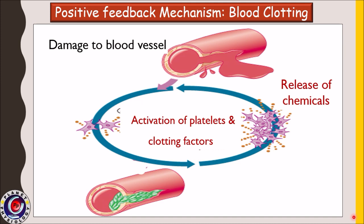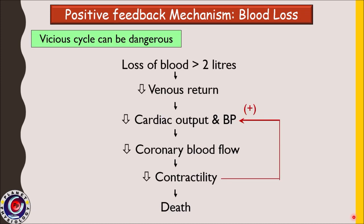Sometimes this vicious cycle can be dangerous. For example, if the body loses more than 2 liters of blood, it drastically reduces venous return. As a result, cardiac output and blood pressure drop, decreasing blood flow to the heart via the coronary arteries. The heart becomes weak, fails to contract sufficiently, causing further reduction in cardiac output and blood pressure — this continues until the person dies. However, timely medical intervention can break this vicious cycle and save the patient's life.